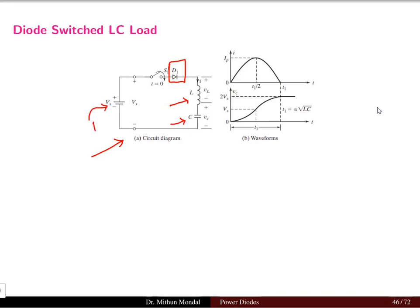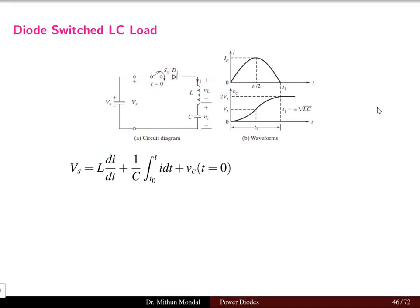The source voltage is a DC source and a switch is connected in the network for current to flow in the closed circuit when the switch is closed at time t equal to zero. When we say the load is an LC load, L stands for the L equivalent and C stands for the C equivalent. These may come from a very complex part of the network consisting of various resistors, inductors, and capacitors, where one L equivalent and one C equivalent can be obtained as the series or parallel combination.